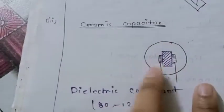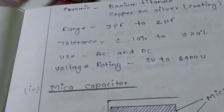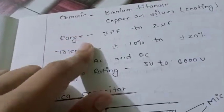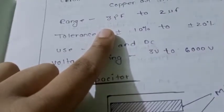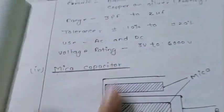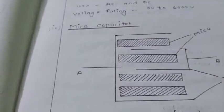Now ceramic capacitor. Dielectric constant is 80 to 1200. It uses ceramic barium titanate with copper and silver coating. Range is 3 picofarad to 2 microfarad with sufficient tolerance. Used in AC and DC, voltage rating is 3 volt to 6,000 volts.